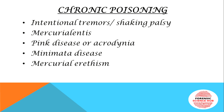Next comes mercurial lentis — this is a peculiar eye change condition that develops when a person is exposed to mercury vapors. What happens is there is brownish deposition of mercury through the cornea of the eye onto the anterior lens capsule.